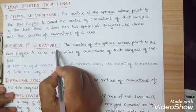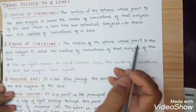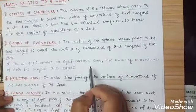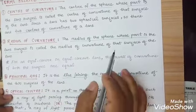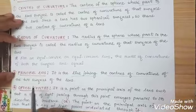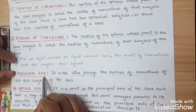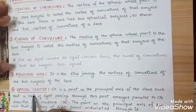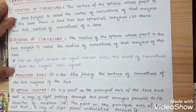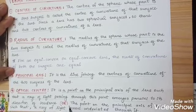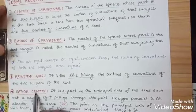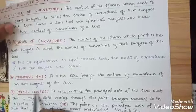The radius of the sphere of which the lens is a part is called the radius of curvature. For equiconvex and equiconcave lenses, both radii of curvature are equal. The principal axis is the line joining the centers of curvature of the two surfaces of the lens. The optical center is the point on the principal axis such that any ray of light passes undeviated through it — it has no deviation.